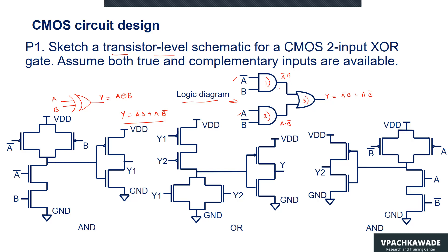We already know how to create non-inverting functions using CMOS transistors. In the transistor-level diagram, this complete section is a NAND followed by an inverter, making the first AND logic. Another NAND followed by an inverter makes the second AND gate. In the middle, a NAND followed by an inverter forms the OR logic.